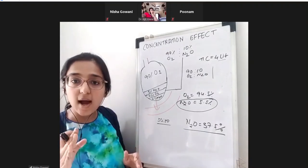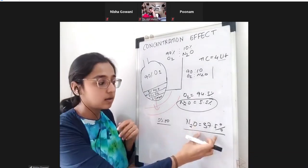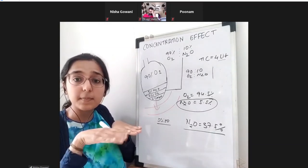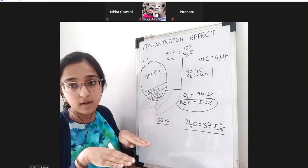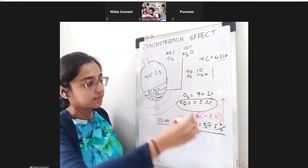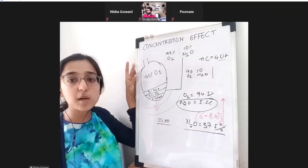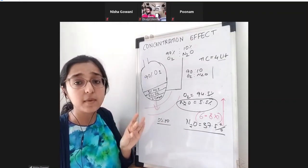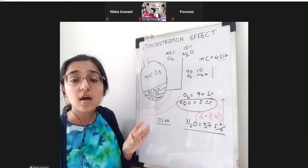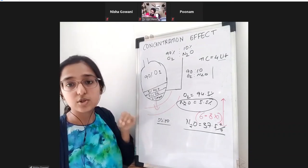This is concentration effect: start with a higher inspired fraction of the inhalation agent and you will achieve the alveolar concentration faster, achieving equilibrium between inspired and alveolar fractions in less time.